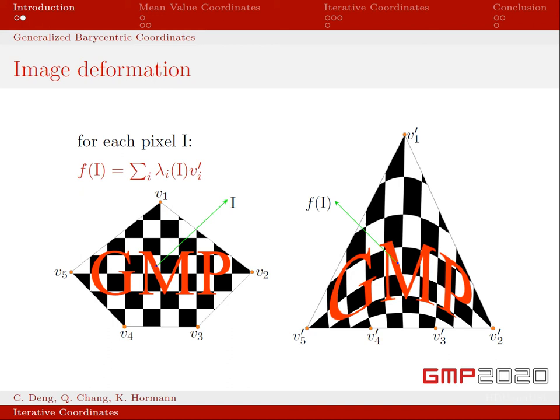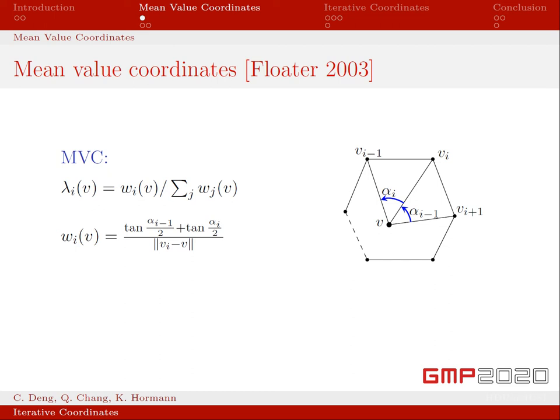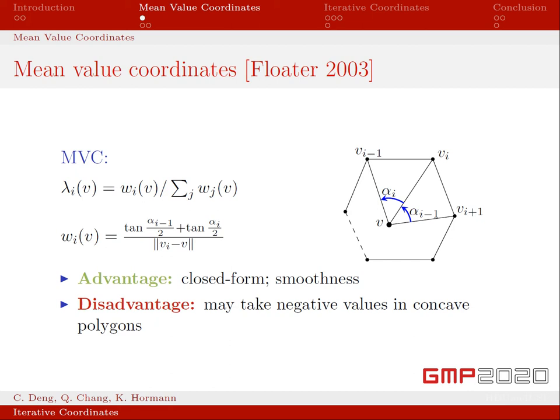A simple example of GBCs are mean value coordinates that are widely used. First, in this slide, the construction of mean value coordinates is shown here. Mean value coordinates have a closed form and are smooth, but may take negative values at some interior points of concave polygons. And these negative coordinate values can give rise to unwanted artifacts in image deformation, as I will show next.